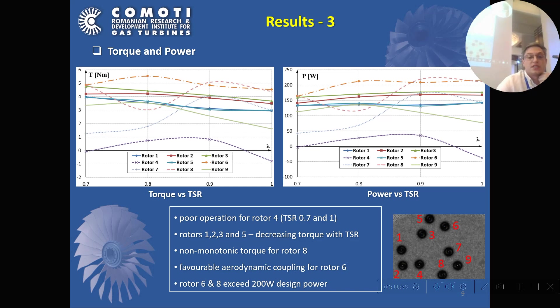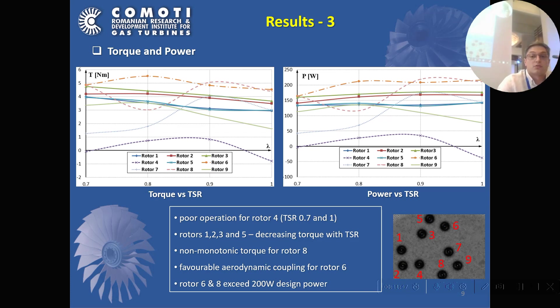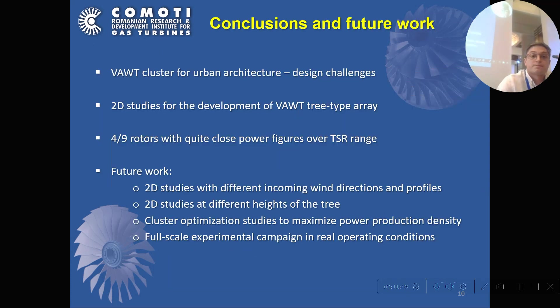Rotors 6 and 8, as we have seen, actually exceed for some TSR regions the nominal design power of the individual turbine.